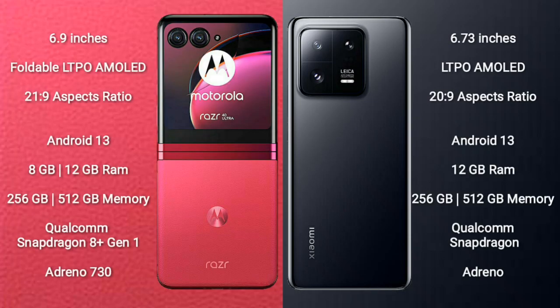Motorola RAZR 40 Ultra comes with a 6.9-inch foldable LTPO AMOLED display and aspect ratio 21x9. Xiaomi 13T Pro comes with a 6.73-inch LTPO AMOLED display and aspect ratio 21x9.